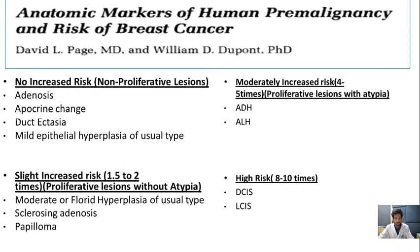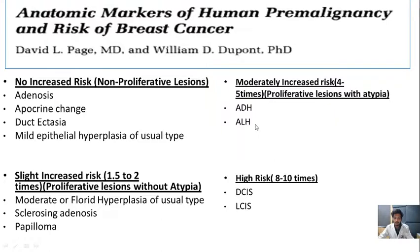According to a study conducted by David et al., which classified breast lesions on the basis of the risk of developing carcinoma, the adenosis, apocrine changes, duct ectasia, and mild epithelial hyperplasia are not associated with an increased risk of breast cancer — these are non-proliferative lesions. However, atypical ductal hyperplasia and atypical lobular hyperplasia are associated with a moderately increased risk, which is four to five times the average risk.